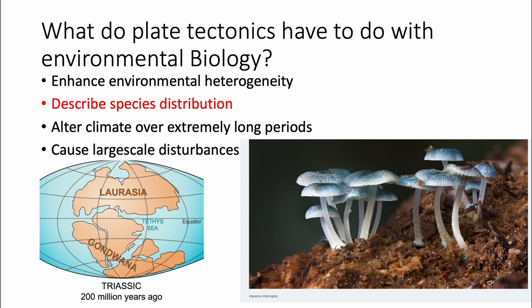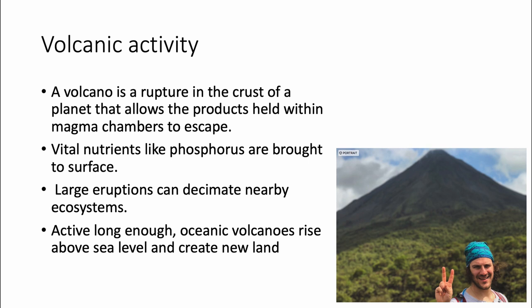Additionally, plate tectonics can alter climate over extremely long periods. Because of plate tectonics you have different land formations — for example the Himalayas are so tall they don't allow moisture to traverse that mountain chain. Beyond the Himalayas you have a desert known as the Gobi Desert. Over extremely long periods of time, plate tectonics can actually alter the climate.